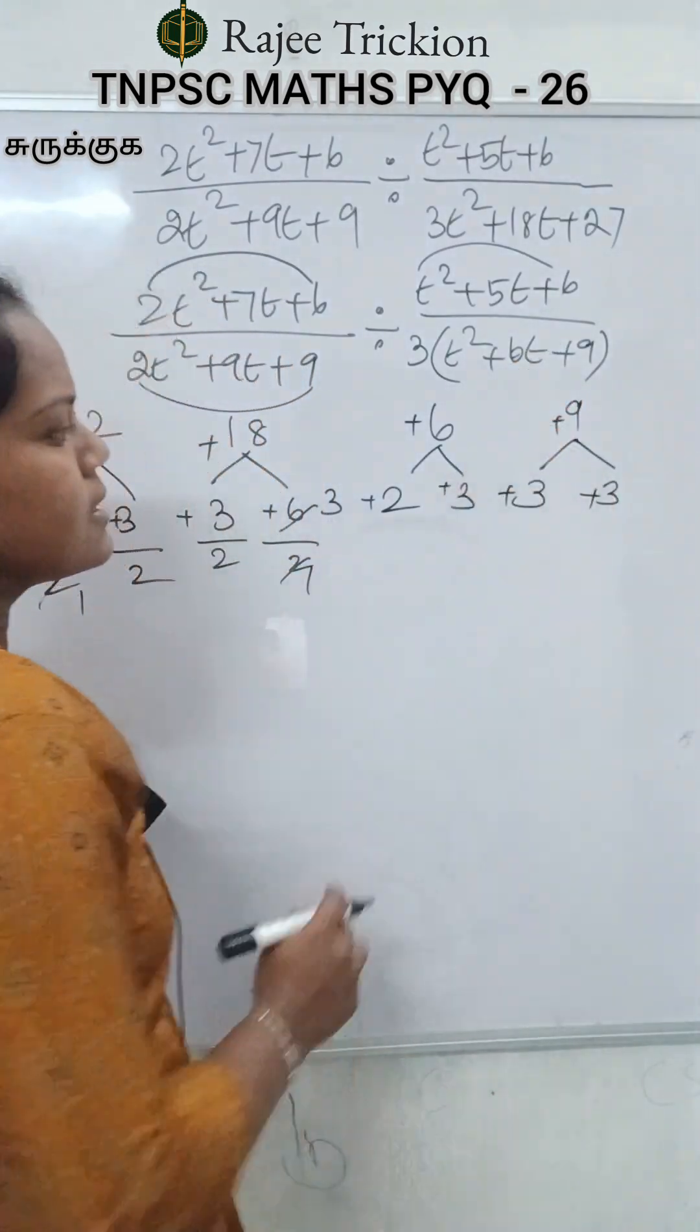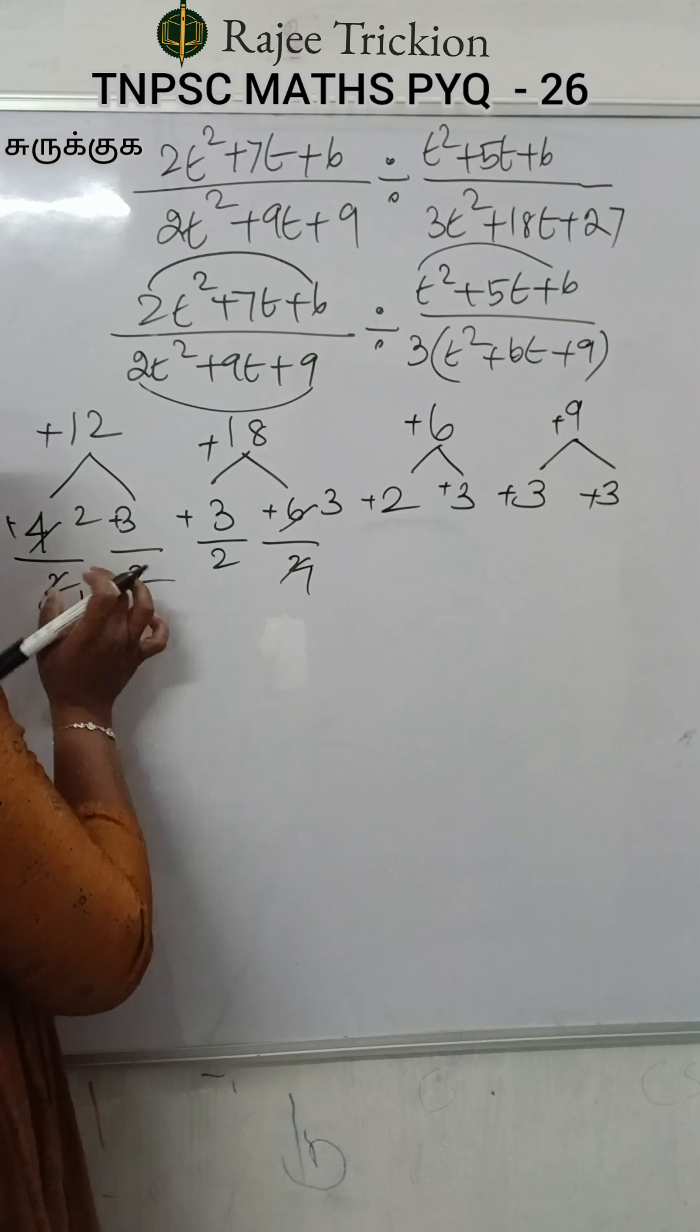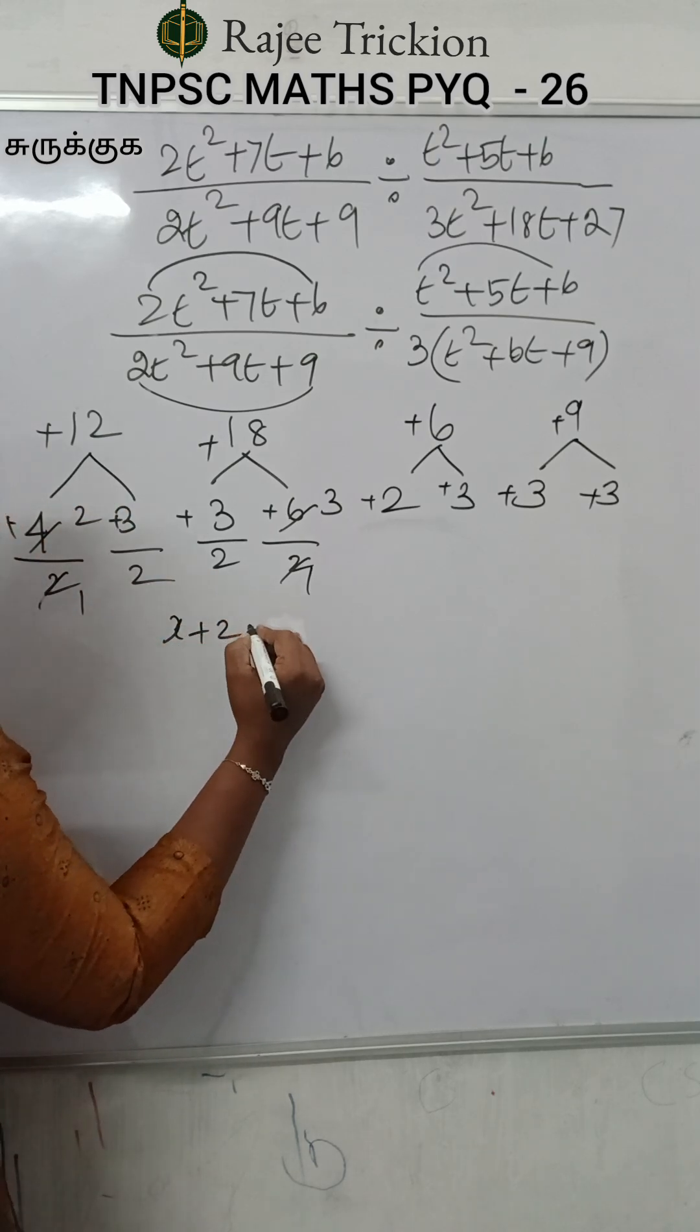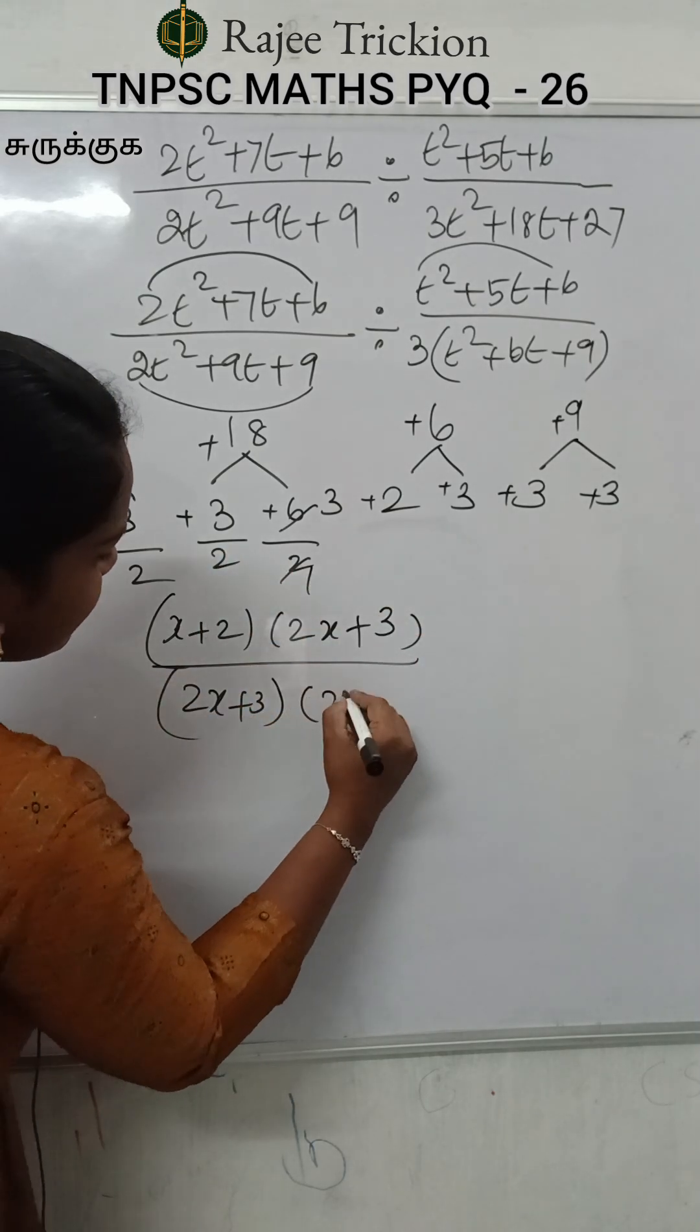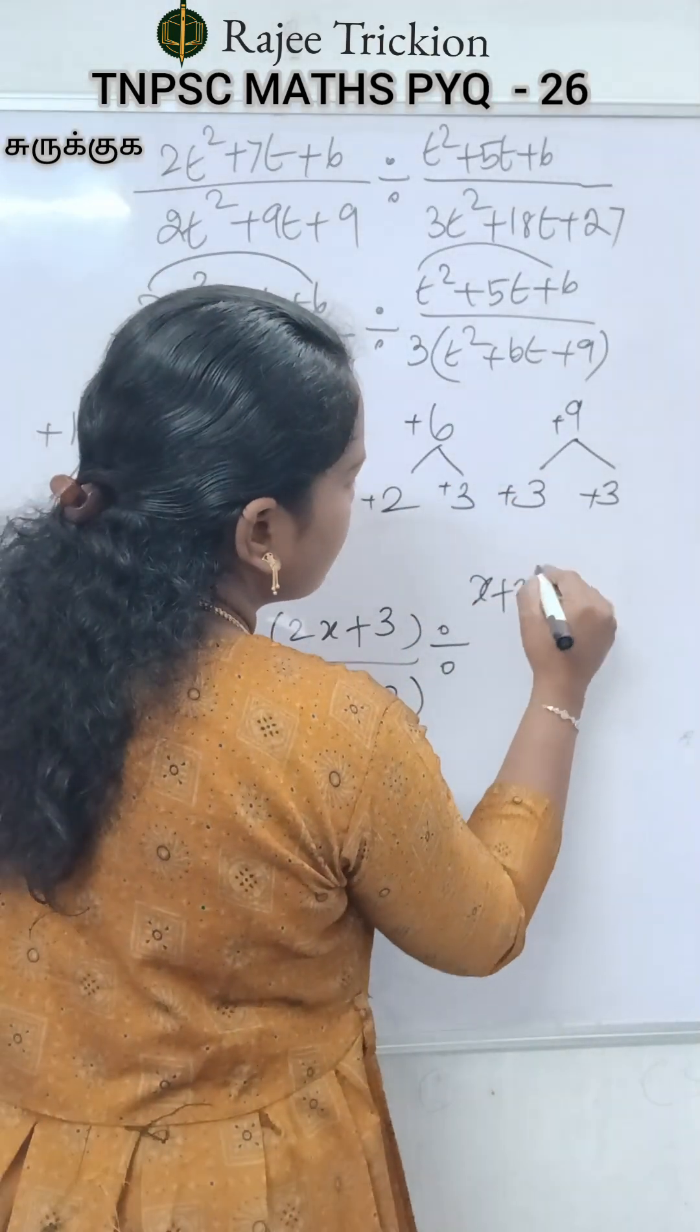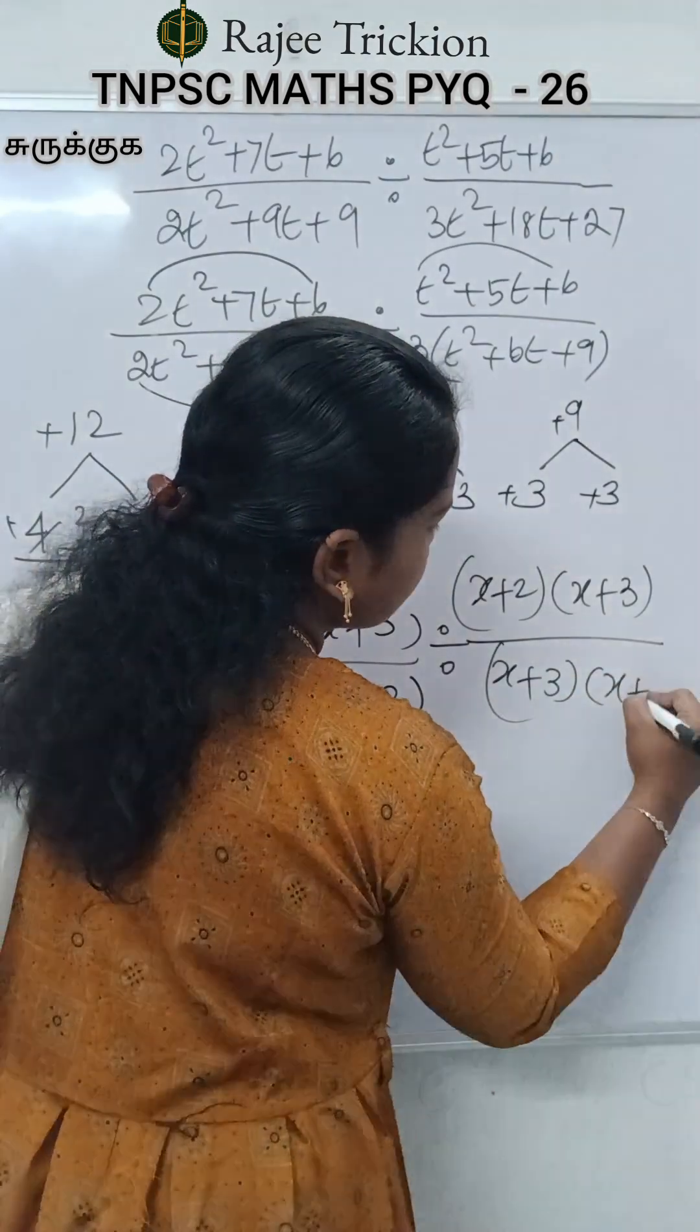You can take the x's in the upper part. So here is x plus 2 into 2x plus 3 divided by 2x plus 3, x plus 3. Here is x plus 2 into x plus 3 divided by x plus 3 into x plus 3.